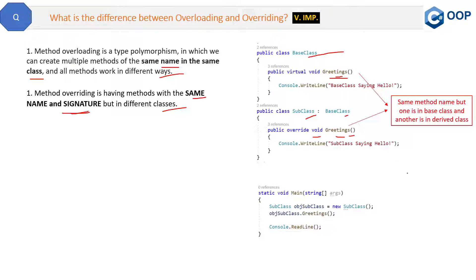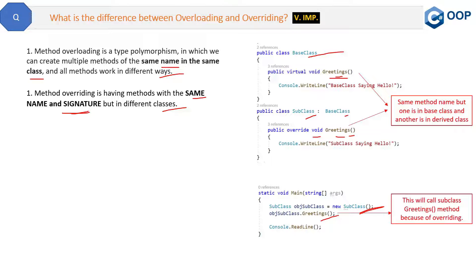In the case of overriding, when you create the object of the subclass and call the greetings method, this will call the subclass greetings method because of overriding, and the output will be 'subclass saying hello', which is right here in the derived class. So this is overriding.